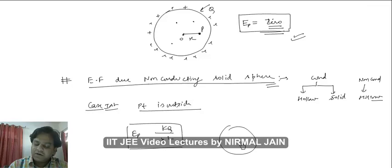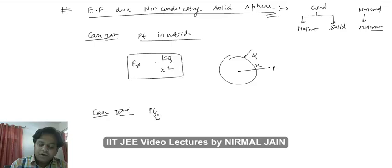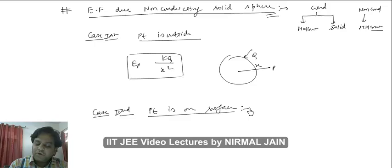Case 2 for non-conducting solid sphere: if the point is on the surface, the electric field will likewise be kq by r squared, where r is the radius and q is the total charge of the sphere.